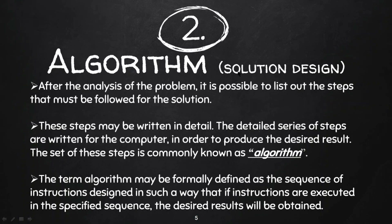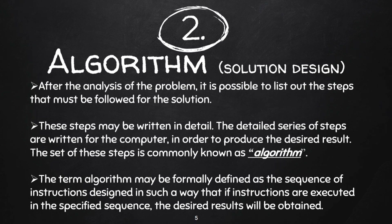First: algorithm. Algorithm means it is a solution design. After the analysis of the problem, you know what type of problem you have. You may be making some software because software helps you solve your problem. After analysis, you know exactly what type of problem you have, and it is possible to list out all the steps that must be followed for the solution.